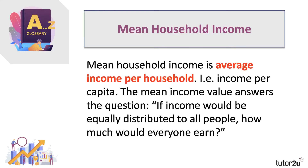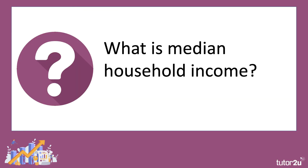The mean value of household income — income per household and single-person household income per capita — answers the question: if income were equally distributed to all people, how much would everybody earn? Essentially, it takes the total income of households and divides to get an income per household. The mean does not reflect the underlying inequality in a dataset of household income — that's one of its key limitations.